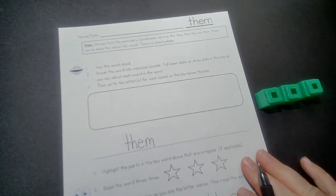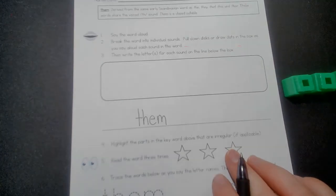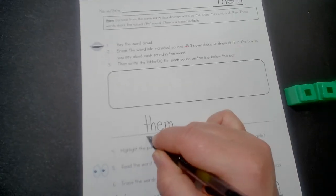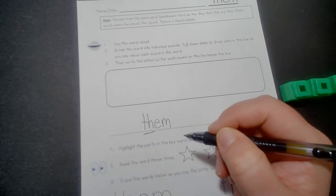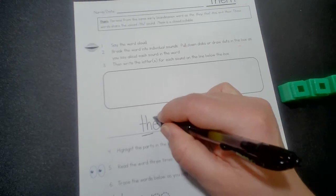Now highlight any parts of the word that are irregular, meaning they don't follow the rules. Well, we know th can be voiced: th, eh, eh.